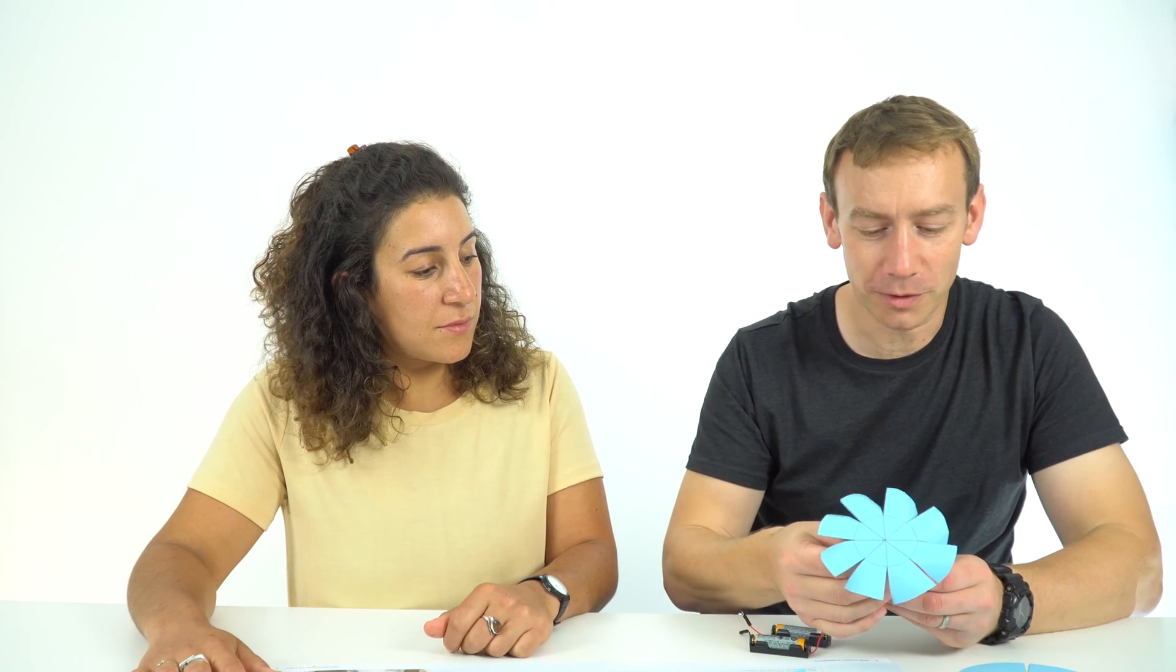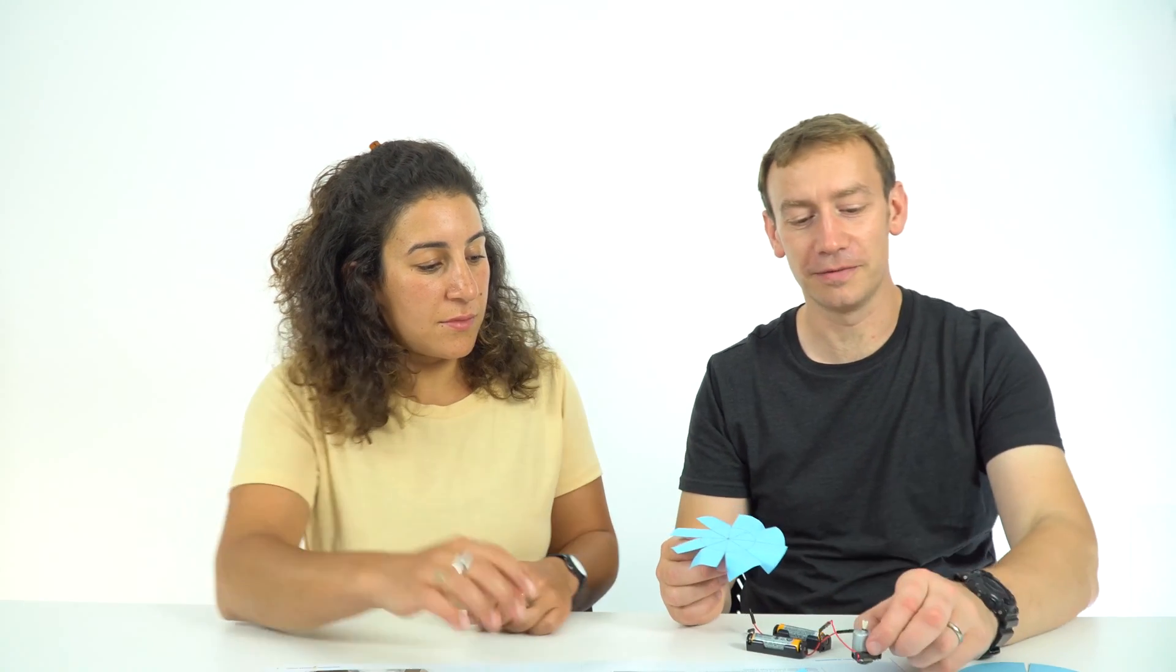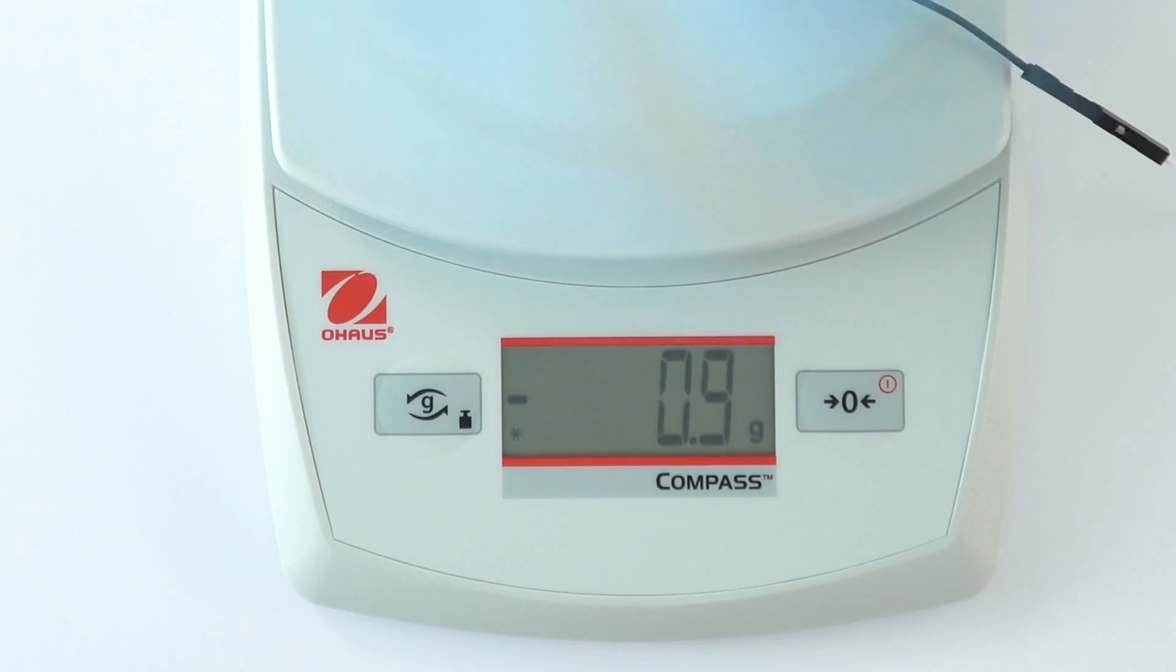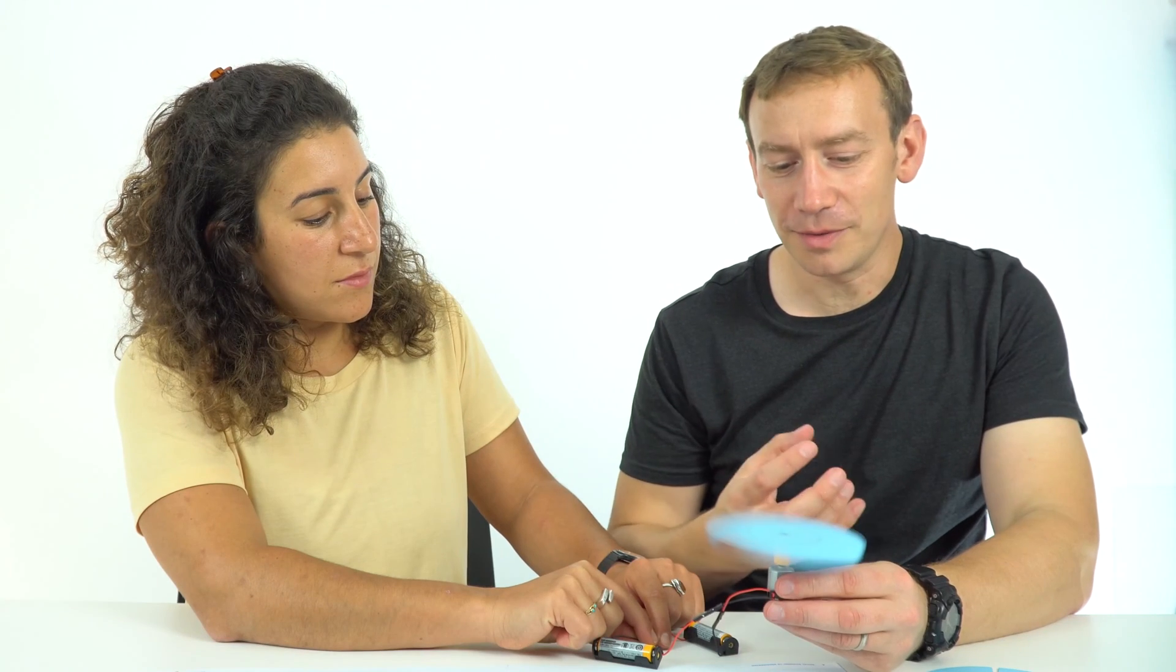One way that we found worked quite well was if you had this held vertically, you put it on top of a very small digital mass balance or set of weighing scales. When you plug it in, you'll see a very slight change in the reading, and that tells you about the force that this is applying. That means you can then start to maybe look at which is the most effective blade design for the fan that you've designed.